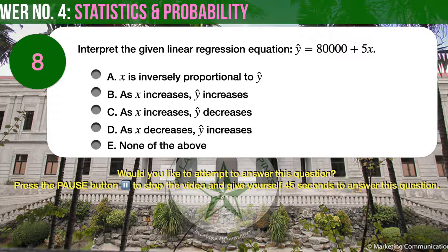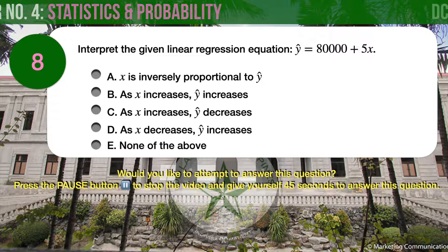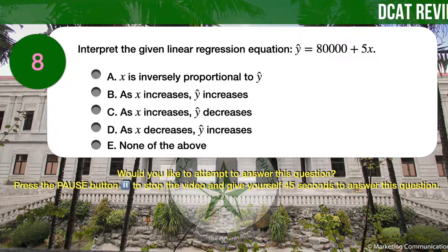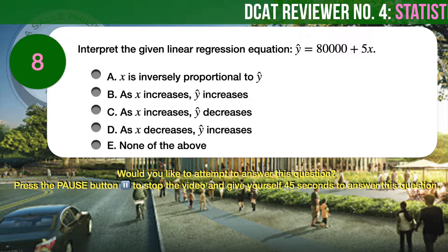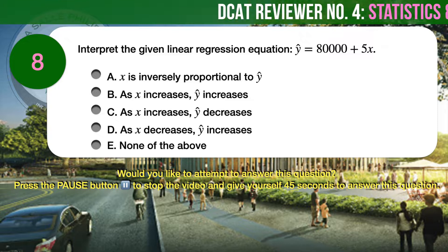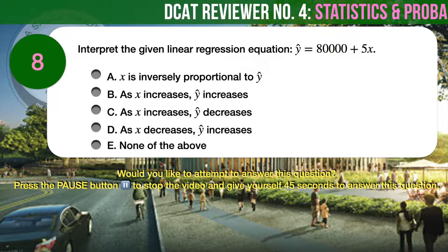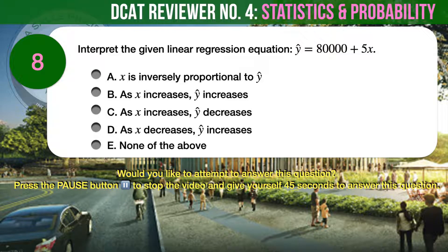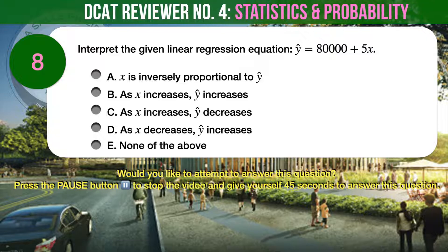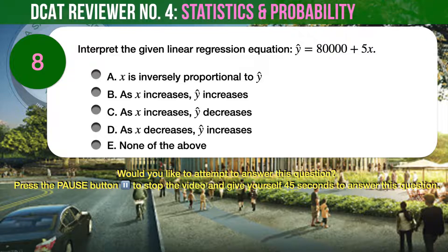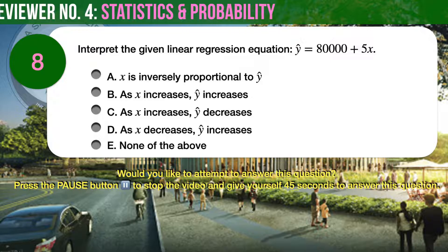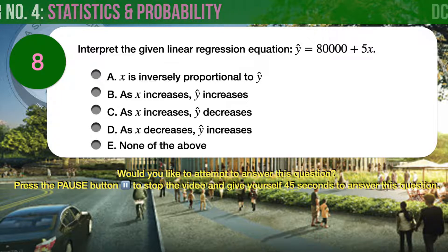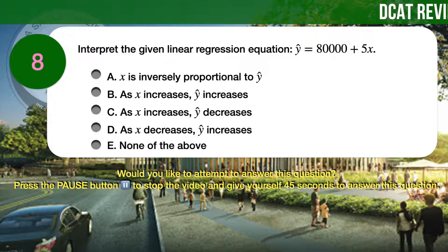Question number 8. Interpret the given linear regression equation: ŷ is equal to 80,000 plus 5x. A, x is inversely proportional to ŷ. B, as x increases, ŷ increases. C, as x increases, ŷ decreases. D, as x decreases, ŷ increases. E, none of the above.